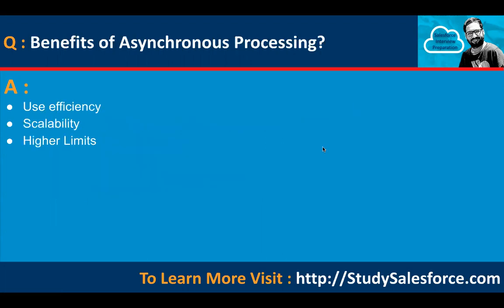What are the types of Asynchronous Processing? The benefits include efficiency, scalability, and higher limits. These are some benefits you can have if you implement Asynchronous Processing in your code.